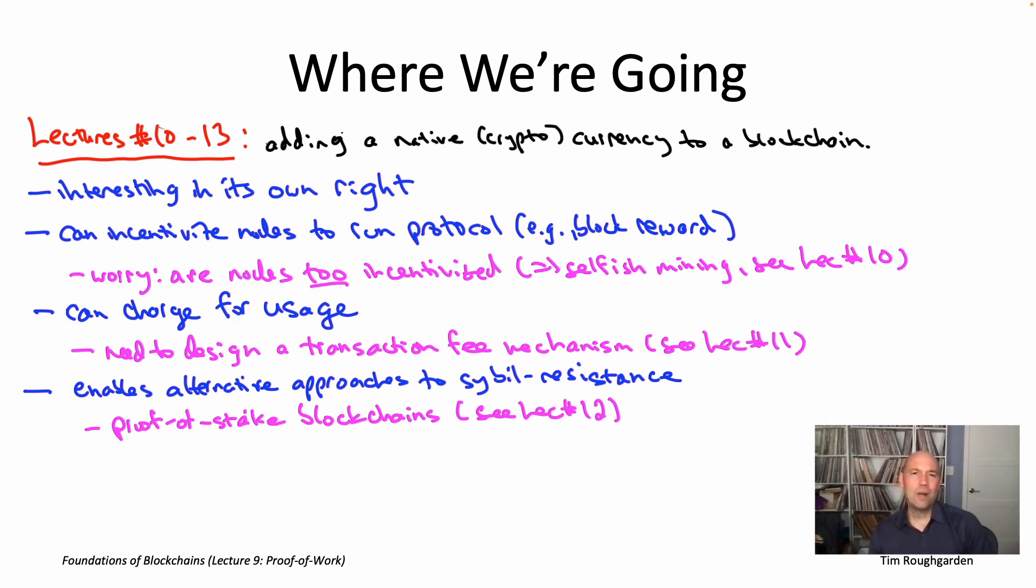Finally, as a consequence of rewarding nodes for running the protocol, they're going to wind up devoting economic resources to running the protocol. So they're going to buy machines to increase their hash rate, like in a proof of work context. They're going to lock up stake incurring capital costs in a proof of stake context. But in any case, the nodes running the protocol basically have incurred economic costs in order to help run the protocol, which they're then getting rewarded for, so they'll make profit at the end. But they're investing in the running of the protocol.